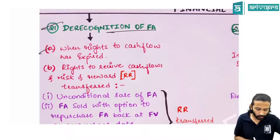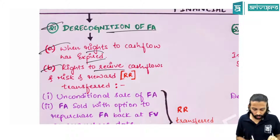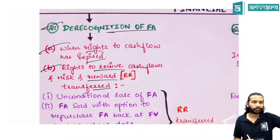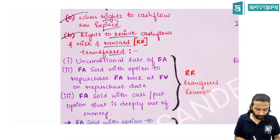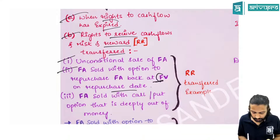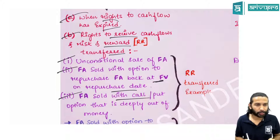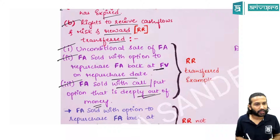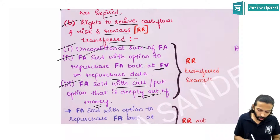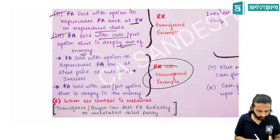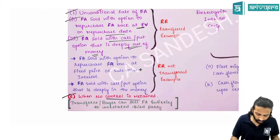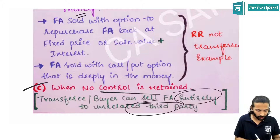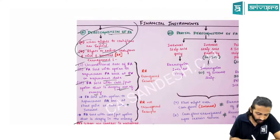Derecognition of a financial asset occurs when: (1) cash flows have expired (debtor has paid), or (2) the right to receive cash flows and the associated risks and rewards have been transferred. Risk and reward is considered transferred in three cases: an unconditional sale; any repurchase option where the repurchase price is at fair value; or any call or put option that is deeply out of the money.